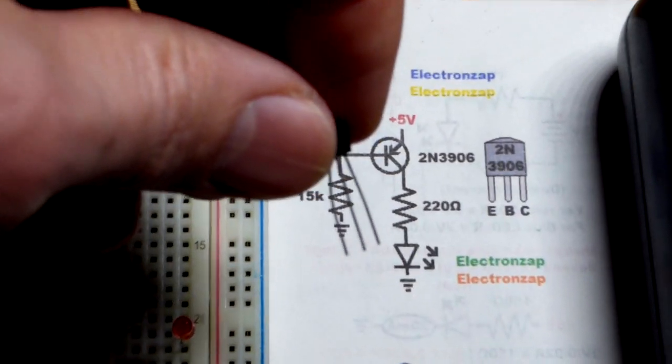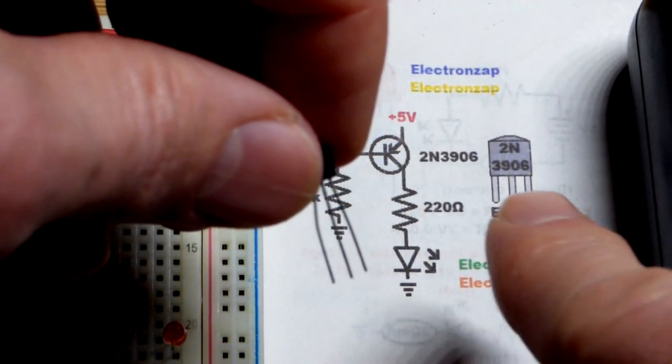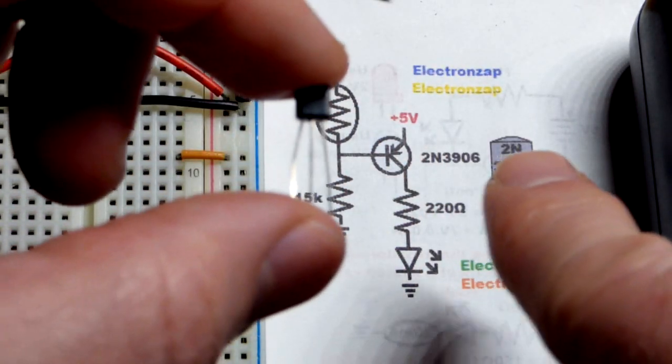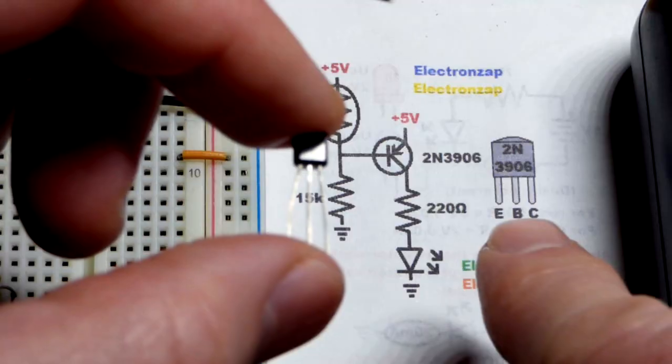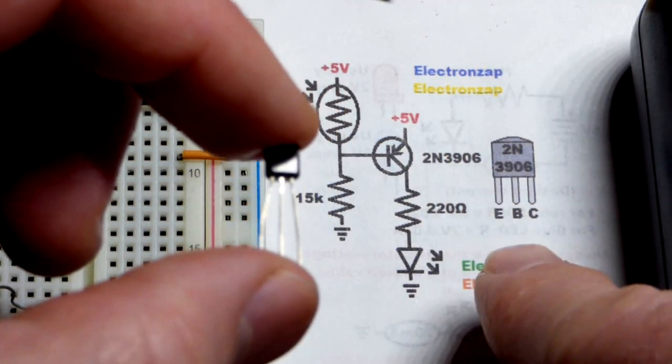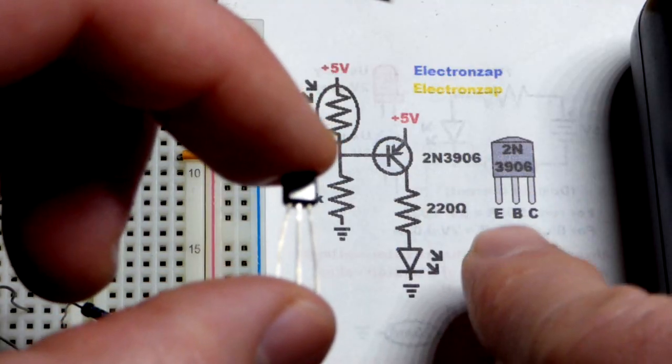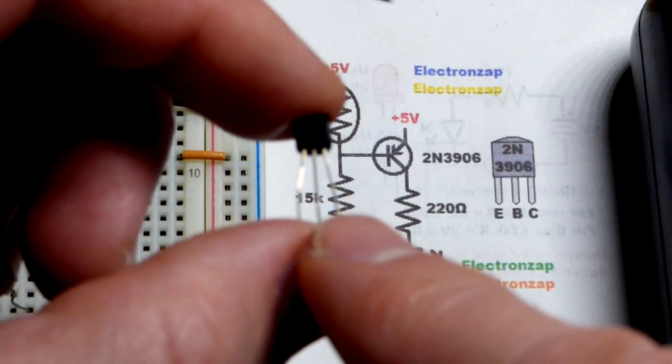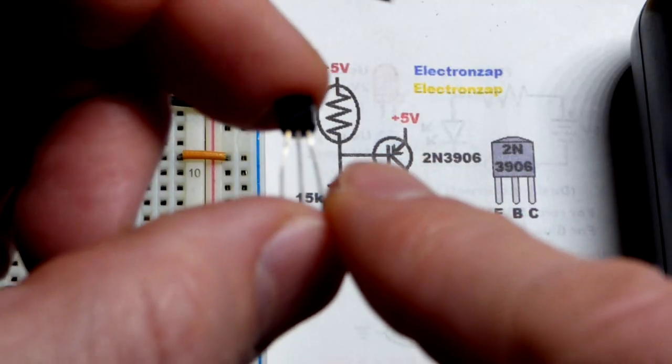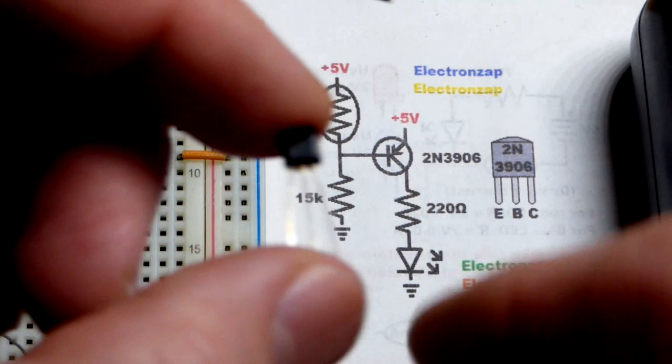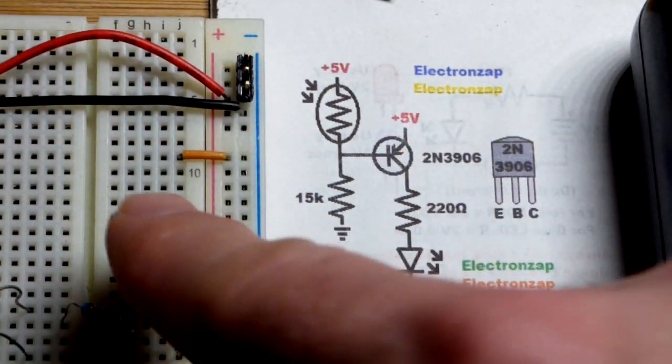But in any case we have the pin layout over there. So if it starts with 2N and it's a bipolar junction transistor, there's JFETs or MOSFETs that also start with 2N, different transistor completely. You want it to be a bipolar junction transistor. If it starts with 2N, then the left pin is probably emitter, middle pin is probably the base, right pin is probably the collector when you're looking at the front of it. So we want the emitter going to the positive supply.